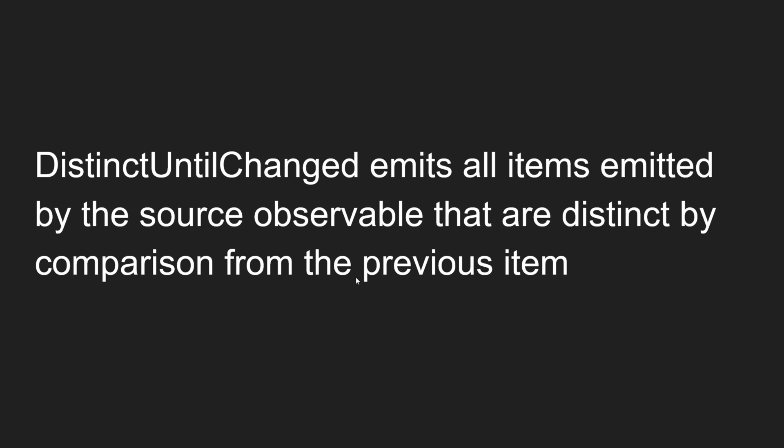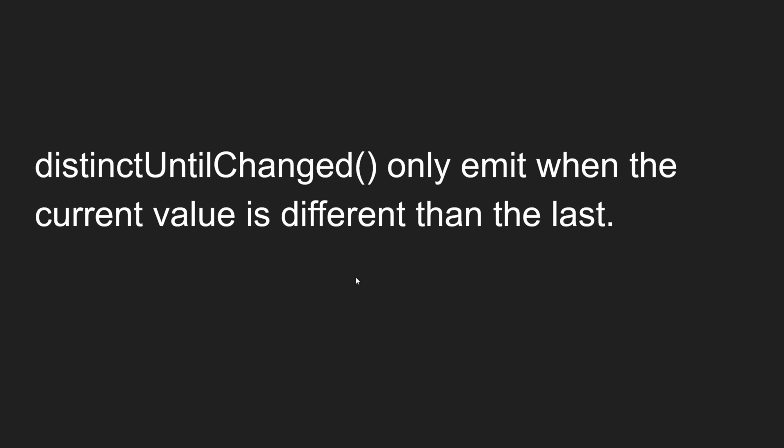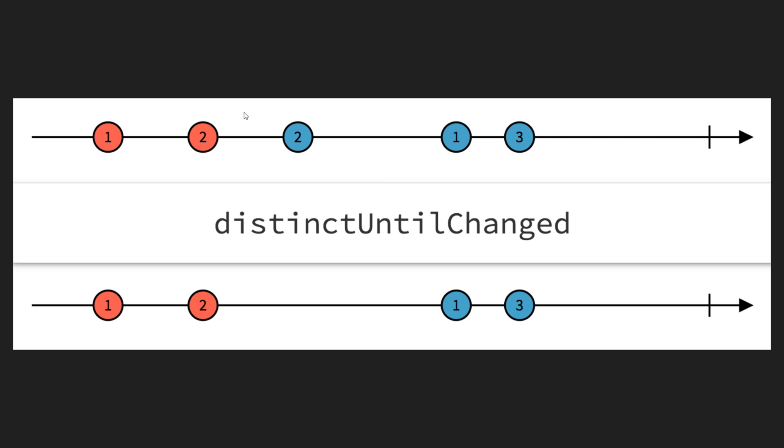That means it will check only the previous item. If the previous item and the current item are the same, it will skip. That is the difference between distinct and distinctUntilChanged. Distinct checks the entire source observable and gives only distinct items, but distinctUntilChanged checks only with the previous item. It only emits when the current value is different from the last value.